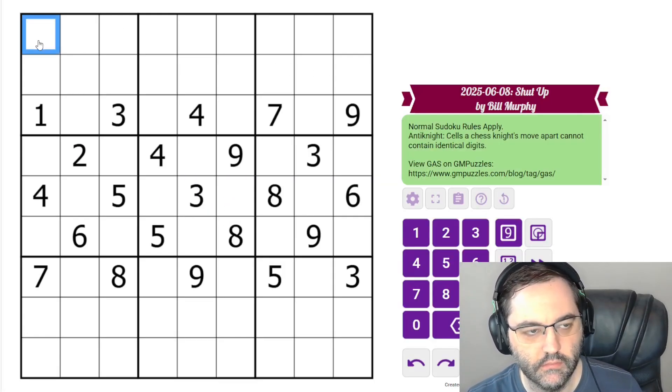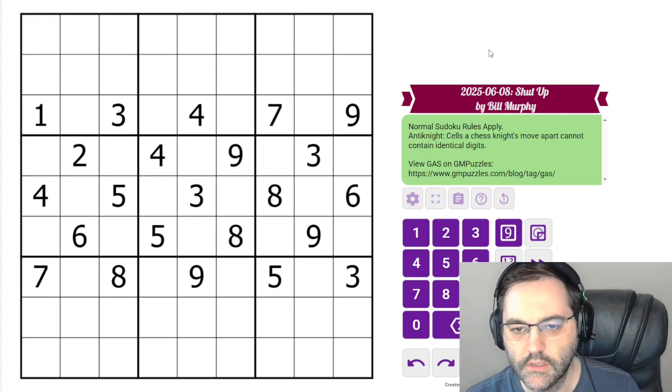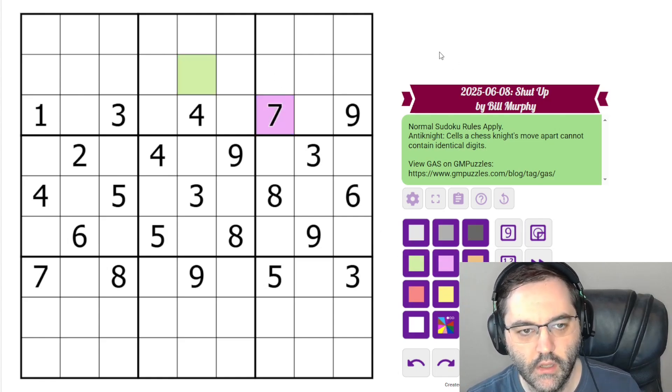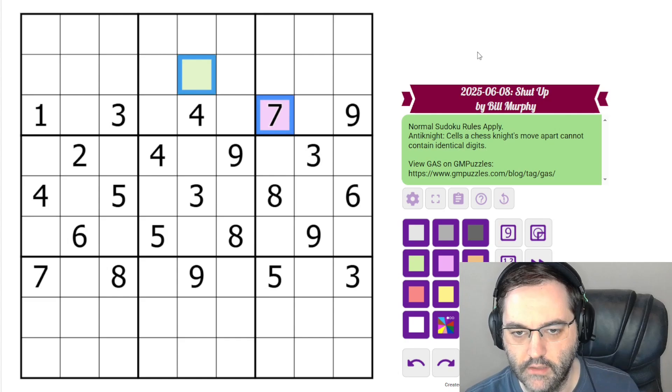This is an anti-knight puzzle. We have normal Sudoku rules, one to nine in each row, column, and three by three box. Additionally, cells separated by a knight's move - these are separated by a knight's move in chess - cannot contain the same digit.